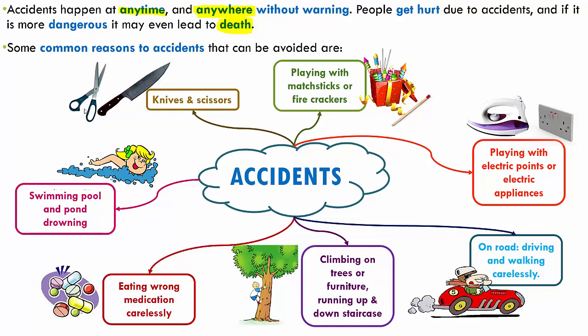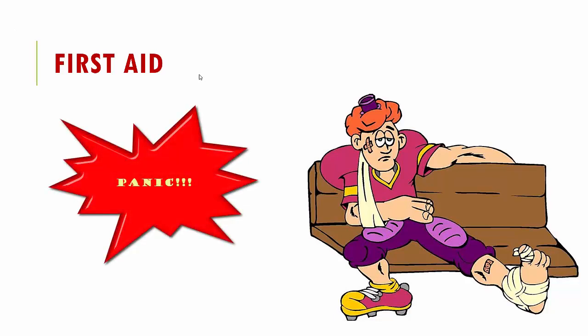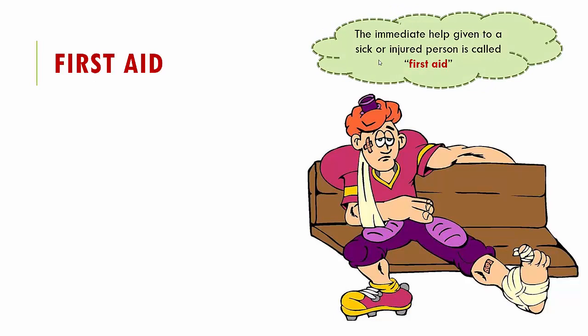For all these situations, we are going to see how we can administer first aid. When accidents happen anywhere at any time without any warning, you should be aware of what to do and when to do it. Some people who don't know how to give first aid panic when an accident happens. The main goal of this chapter is to educate all of you so you know what kind of help to give for what kind of injury. The immediate help given to a sick or injured person is called first aid.